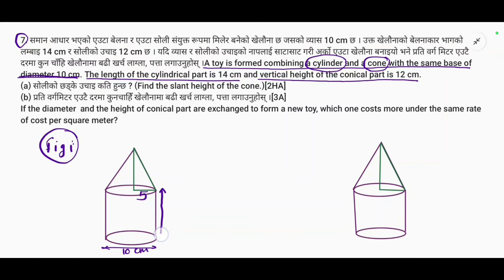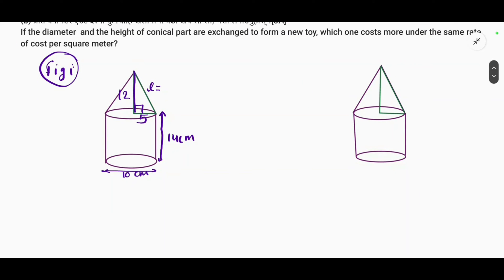The length of the cylindrical part is given. We identify the border dimensions. We know that h-squared equals p-squared plus b-squared. Using the Pythagorean theorem on the right-angle triangle of the cone to find the slant height.